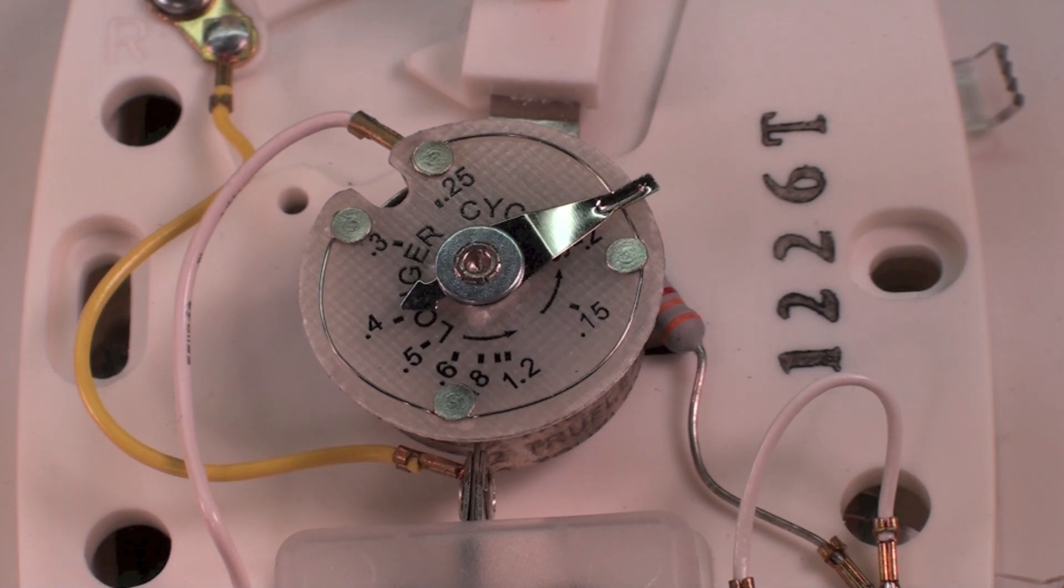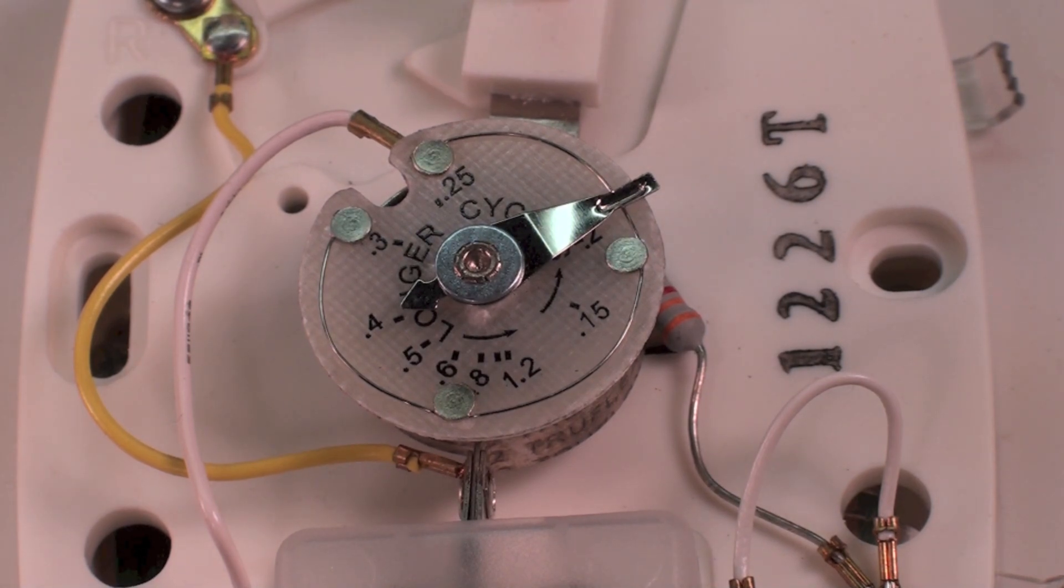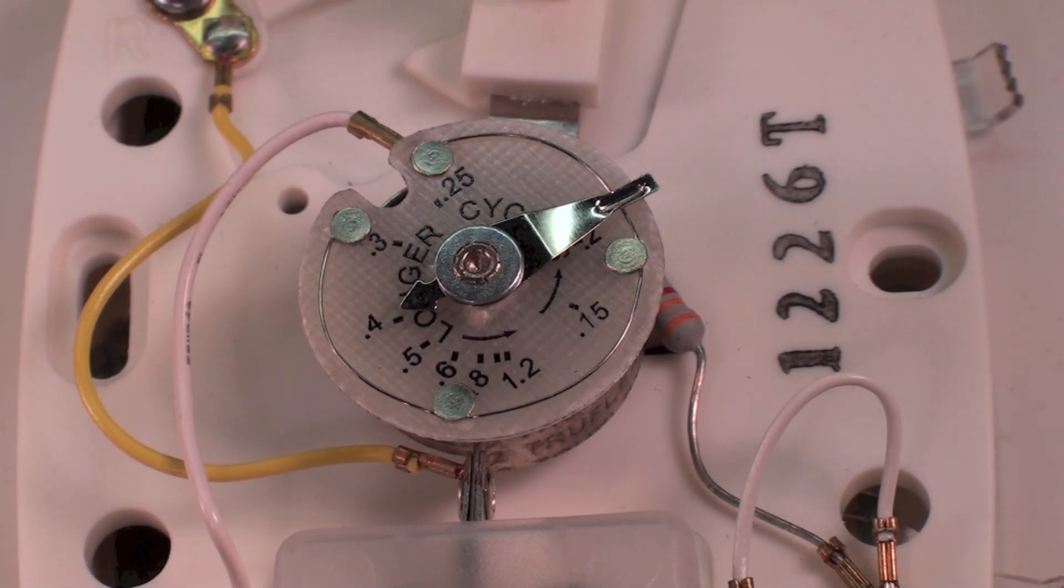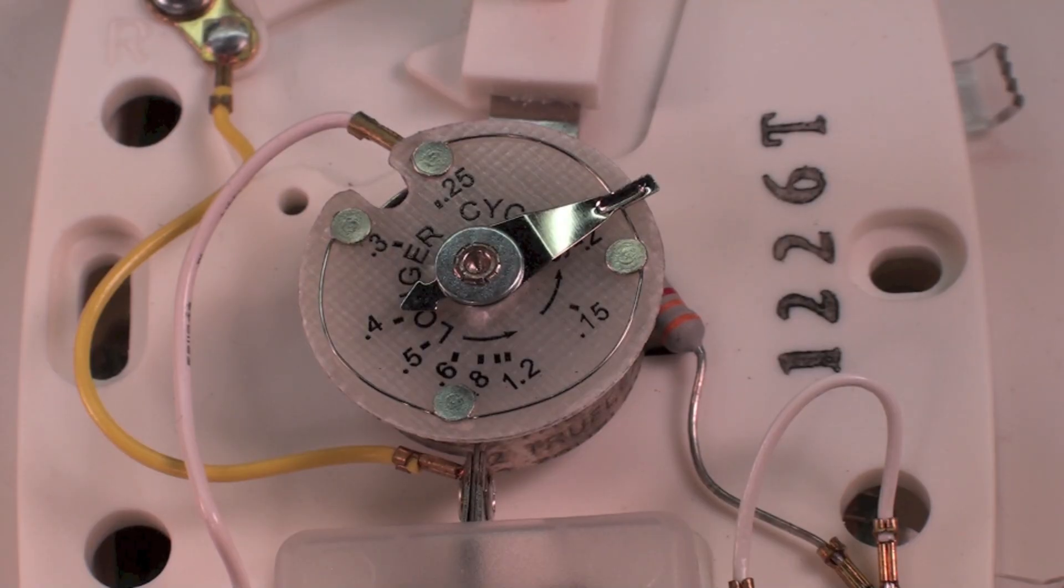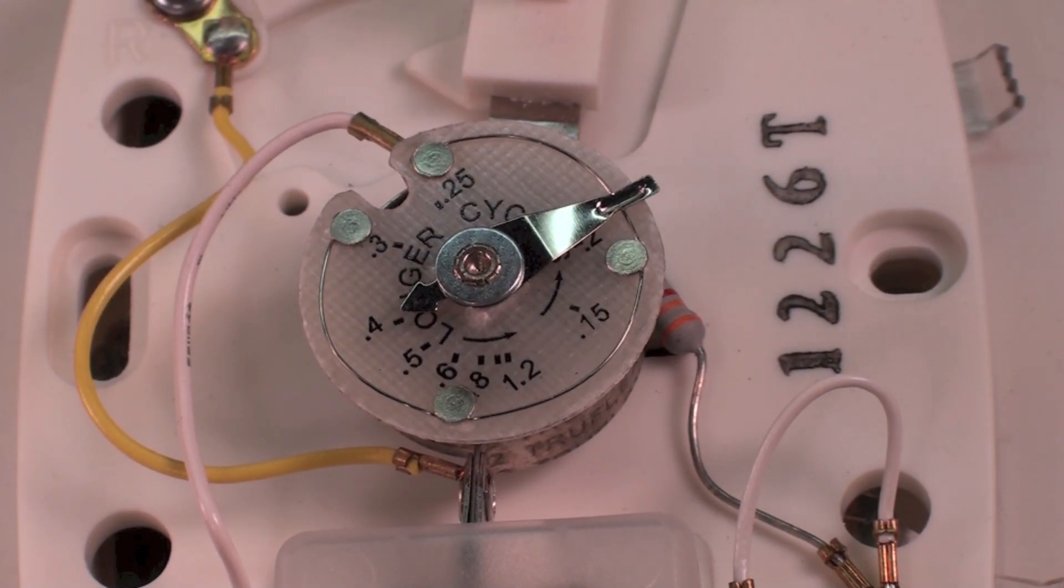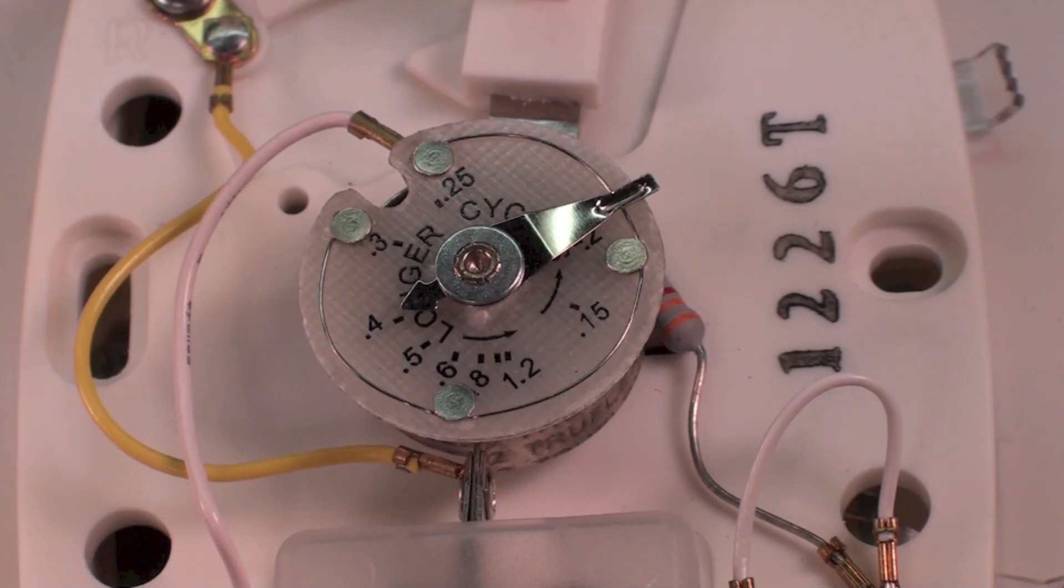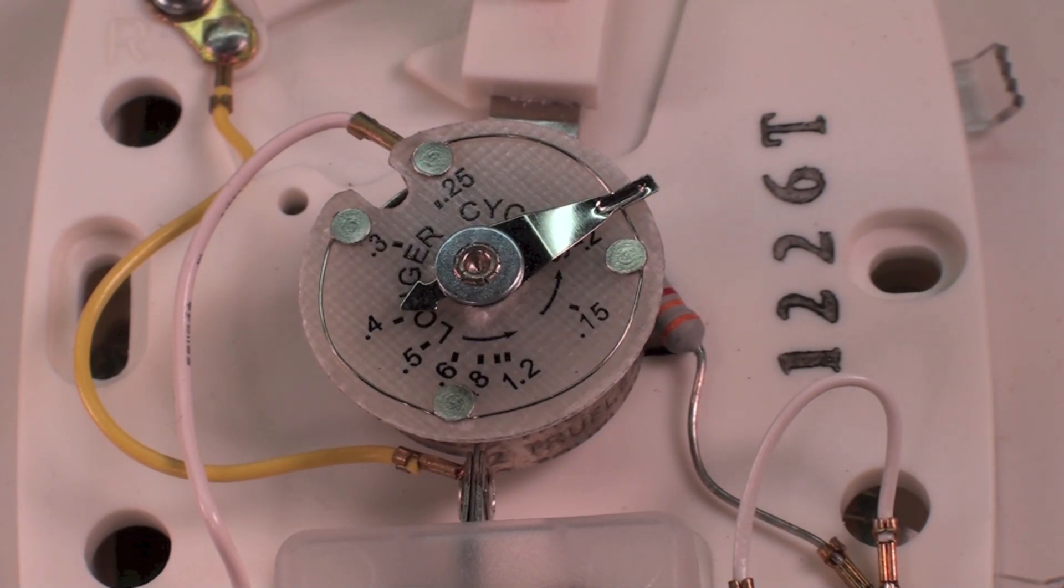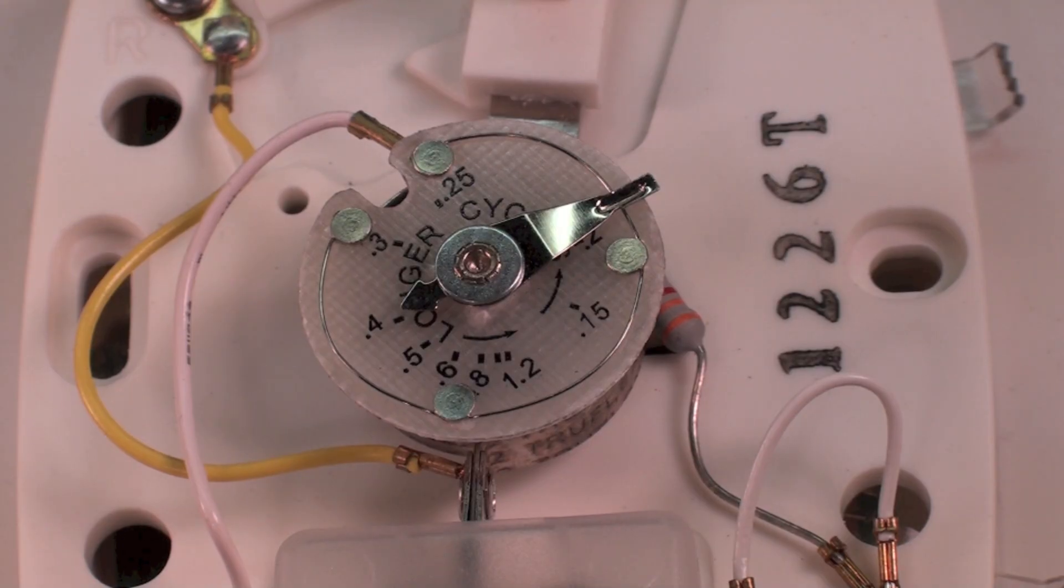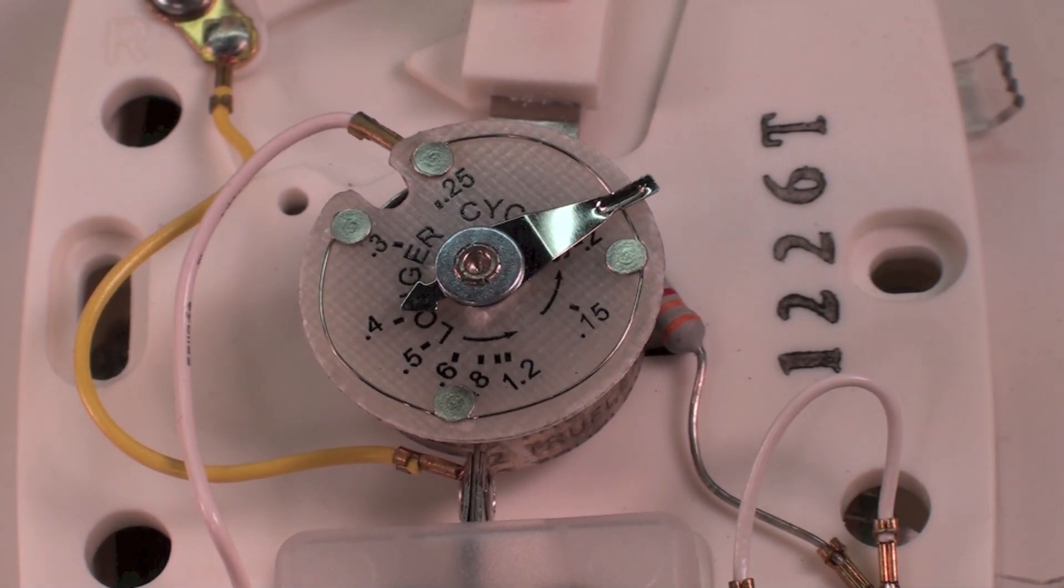Other things that can affect this - if the cycles are too long, the thermostat may not be the problem. It could be that something is blocking the registers, preventing air from moving throughout the house. Could be the thermostat is located incorrectly where it's in a dead airspace.